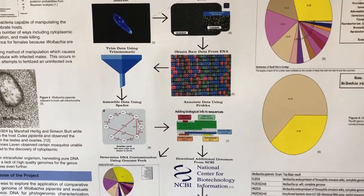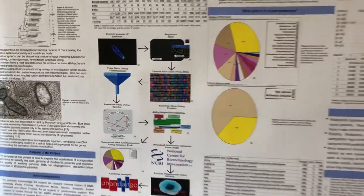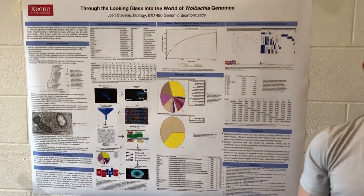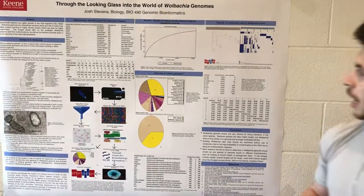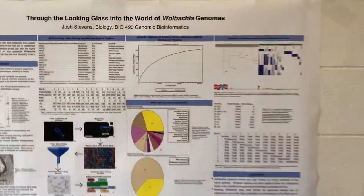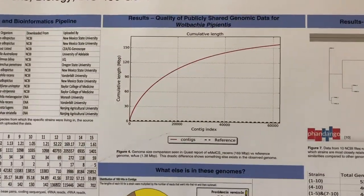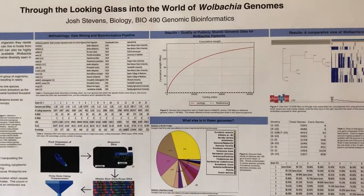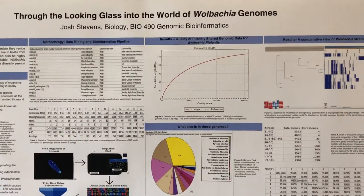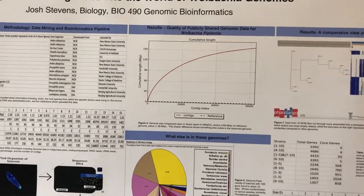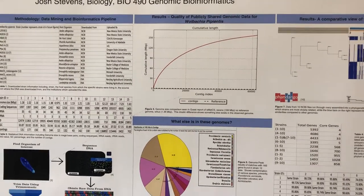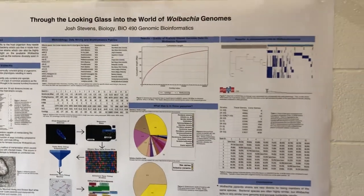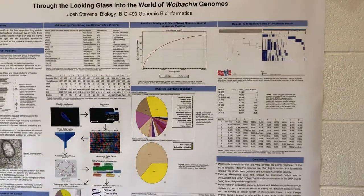I then downloaded a reference genome from the NCBI and compared one of my genomes from the ENA using QUAST. This figure shows the comparison of base pairs in their sequences. It clearly shows contamination, as there are 170 million base pairs compared to the 1.2 million base pairs seen in the reference genome.